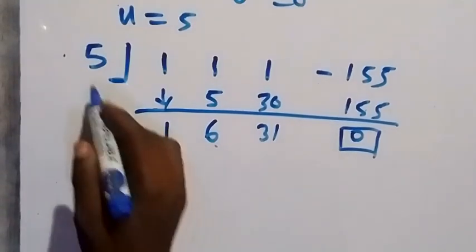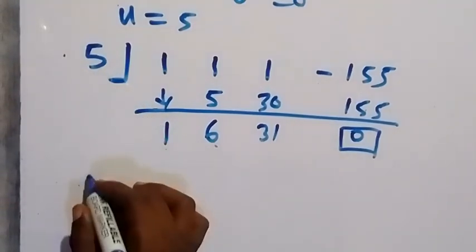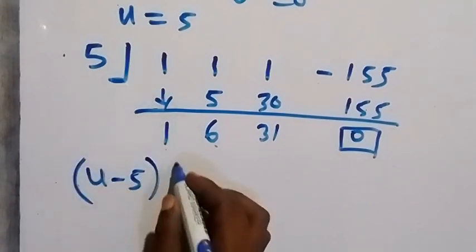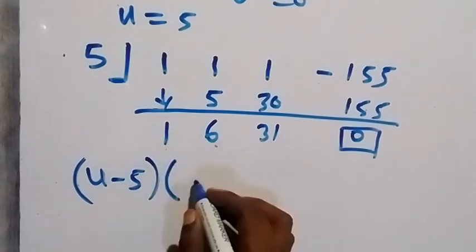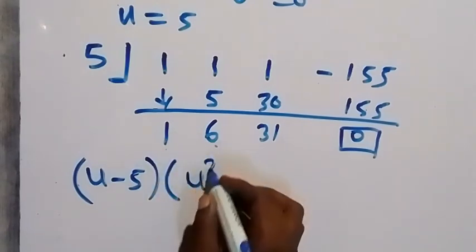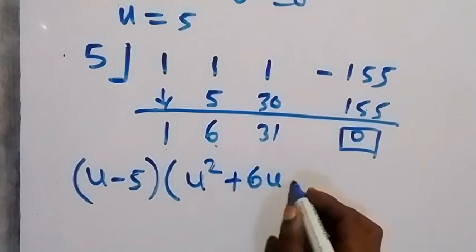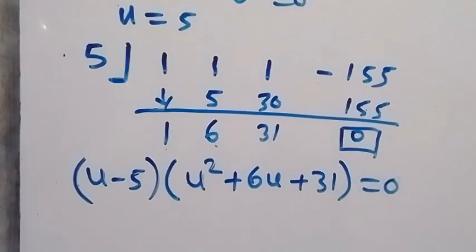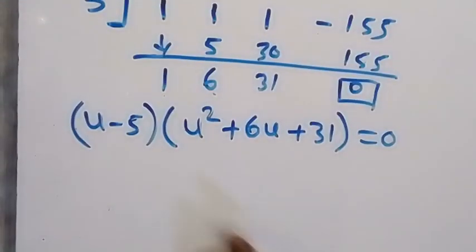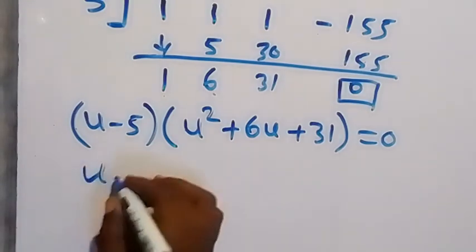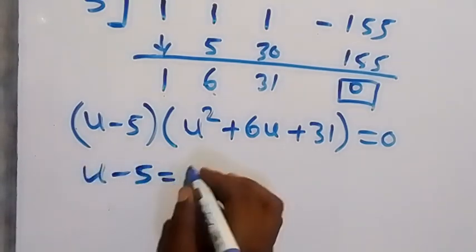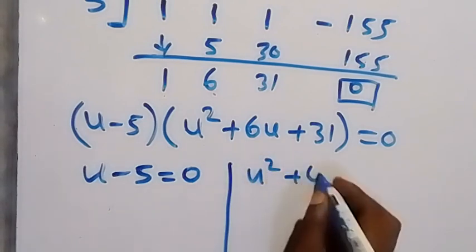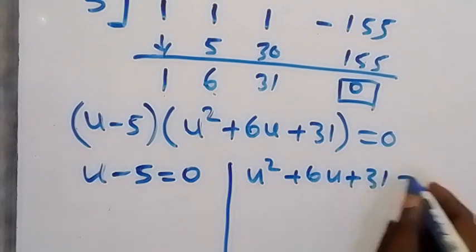That means we have u minus 5 as a factor. And the other quadratic factor, using these coefficients, will be u squared plus 6u plus 31, which equals 0. So we have u minus 5 equals to 0, and also u squared plus 6u plus 31 equals to 0.